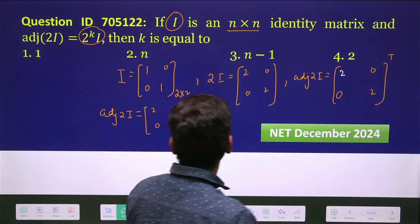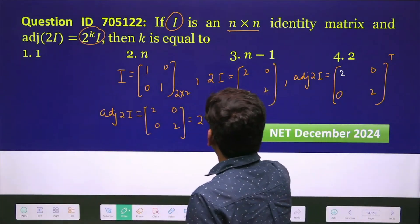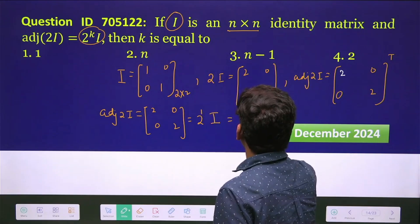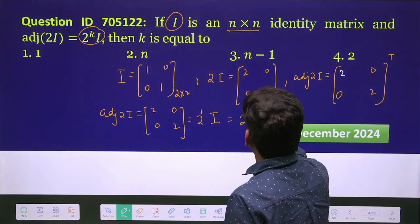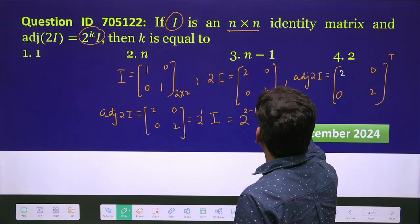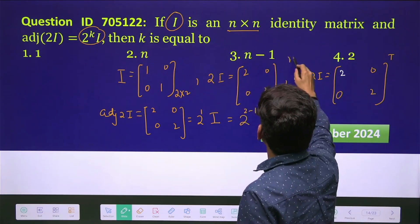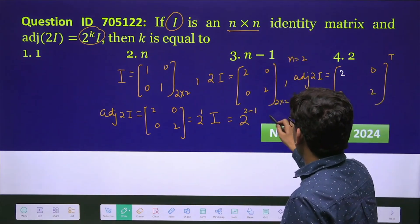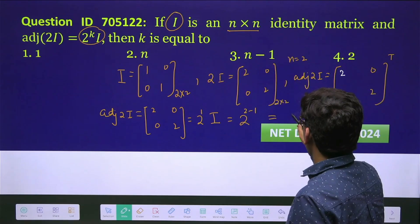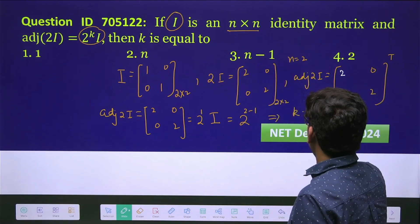So here it is power 1, so I can write 2^(2-1). And if you remember, this was my 2×2 matrix, so I have taken n=2. So it has come 2-1, so k will become 2-1.